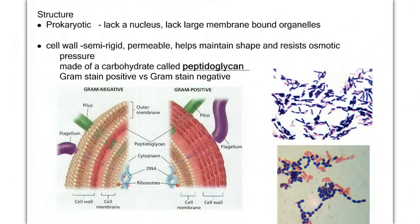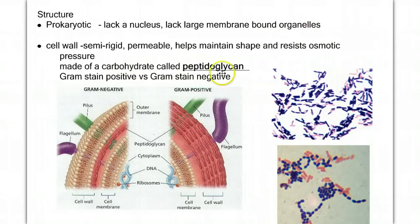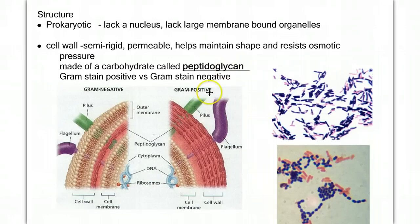Bacteria are prokaryotic, lacking a nucleus and large membrane-bound organelles. They have a cell wall made of a carbohydrate called peptidoglycan. That's significant because all cell walls are made of carbohydrates — in plant cells, cellulose; in fungus cells, chitin. Peptidoglycan is just a different type of carbohydrate.